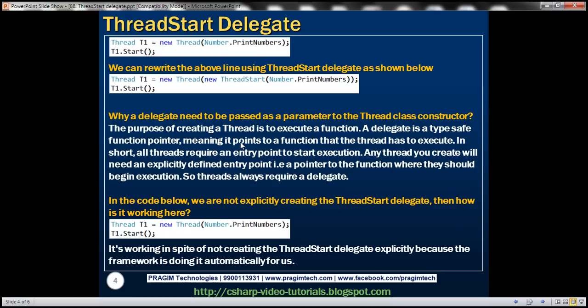Now you may be wondering, within the first example, we have created a thread like this. To the constructor, we have just passed the name of the function that we want this thread to execute. We didn't explicitly create a delegate and pass it to the Thread class constructor. So how did it work then? It's working there in spite of not creating the ThreadStart delegate explicitly because the framework is doing that automatically for us behind the scenes.